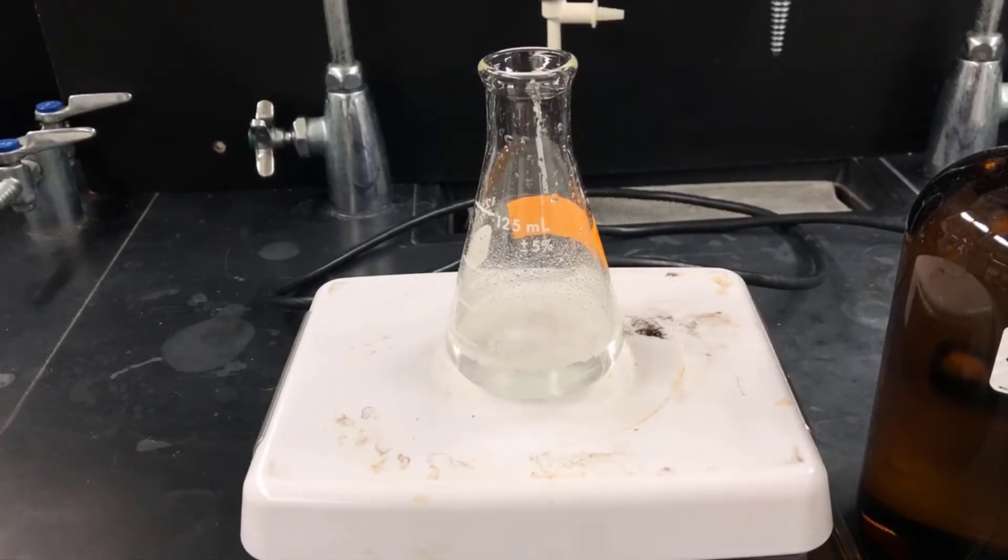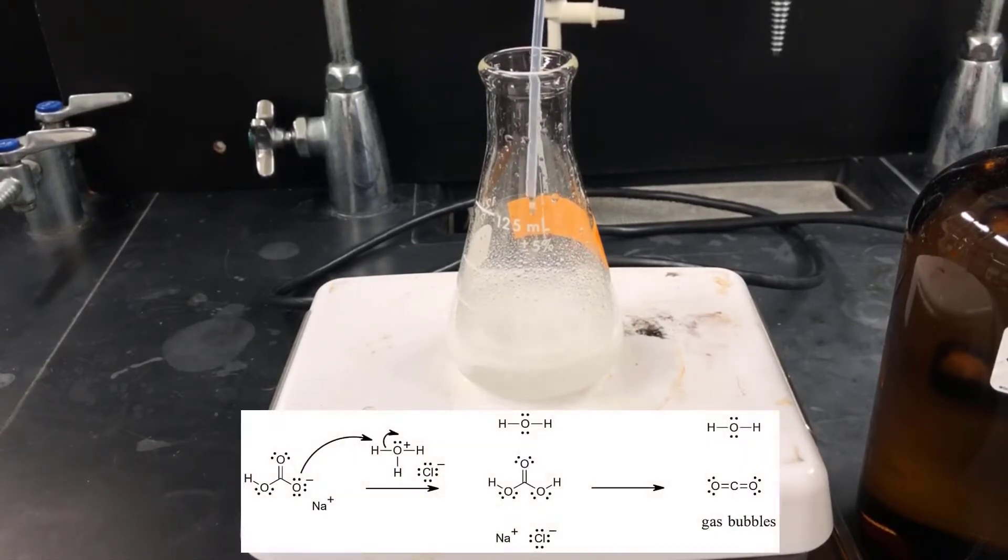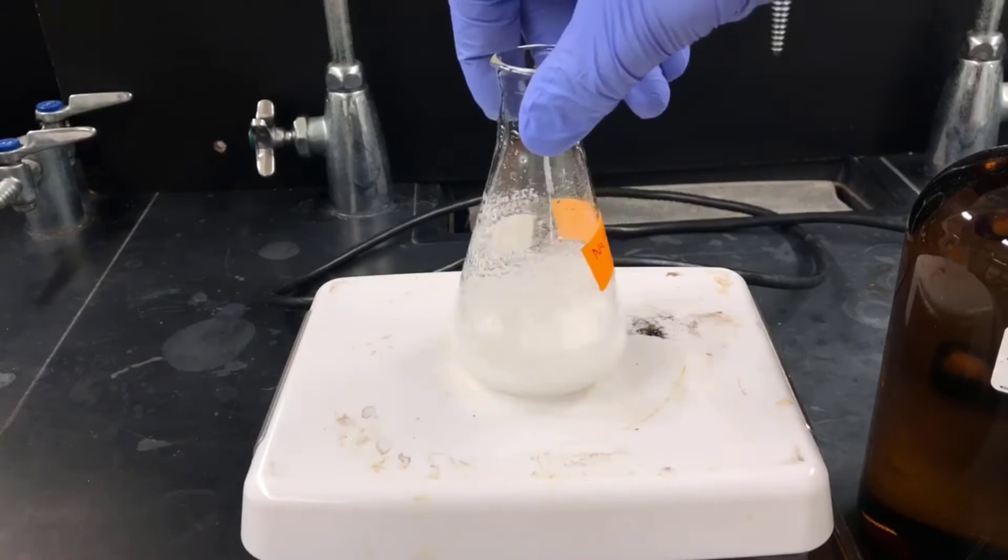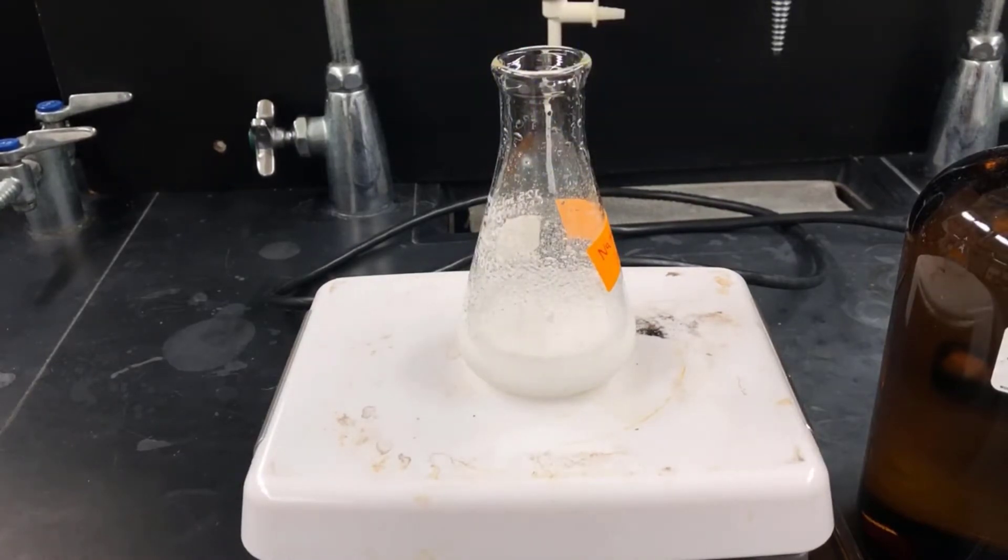The bubbles here are carbon dioxide gas evolving out of the solution as I add acid. It's from sodium bicarbonate getting protonated and then forming carbon dioxide and water. It's the same reaction that happens when you take baking soda and add vinegar to it. Eventually, I'll reach a point where the aspirin is completely protonated and precipitated. In order to know that, I need to check the pH to make sure it's acidic.